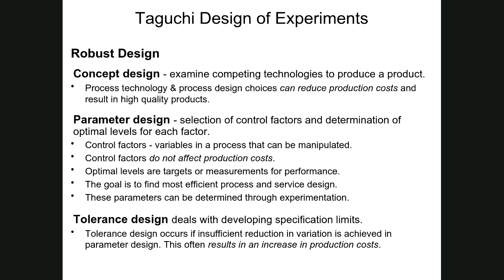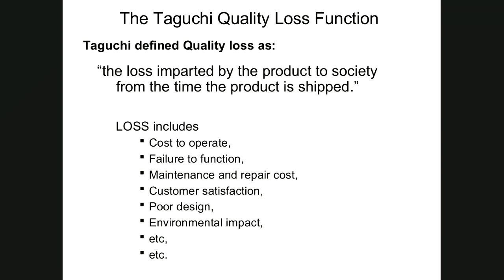The next topic is the Taguchi loss function. Taguchi had a definition of quality that differs from traditional ones — he identified quality loss as the loss imparted by the product to society from the time the product is shipped. It's not just about tolerances. That loss to society includes the cost of operating the machine, failure of the machine to work, customer satisfaction issues, maintenance or repair problems, design-related issues, environmental impact, and life cycle costs. There's a whole range of areas encompassed in this definition of quality loss.